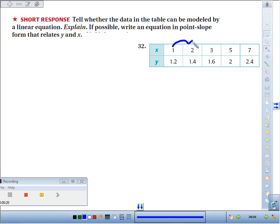So you might notice that as x gets bigger, it doesn't get bigger by 1 each time, but as we go from 1 to 2 to 3, we go up by 0.2, up by 0.2.